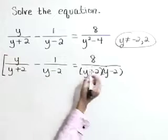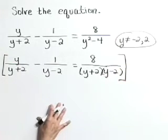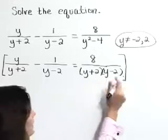Now, let's go about solving this equation by multiplying through by our lowest common denominator, which is y plus 2, y minus 2.